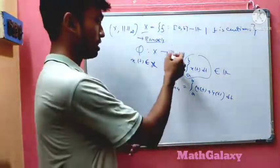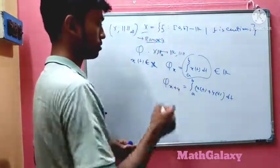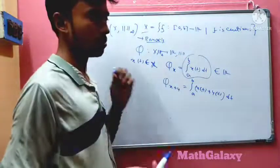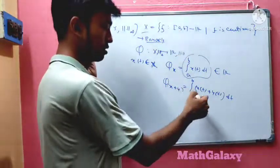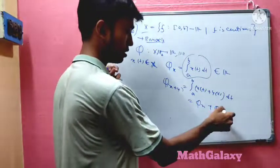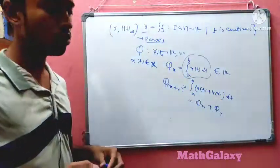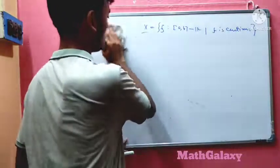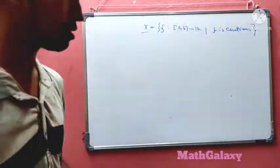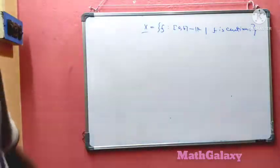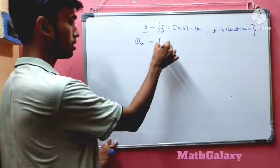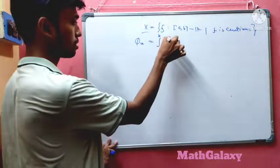Here X is equipped with the sup norm and the codomain ℝ has the usual norm. We define φ(x) as the integral from a to b of x(t) dt, and we want to determine the norm of the linear functional φ — this is essentially the key problem here.